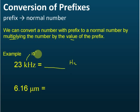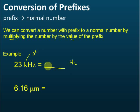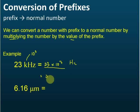I prefer to write it in index form: 10 to the power of 3. So 23 kilohertz is equal to 23 multiplied by one thousand, which equals 23,000 hertz.